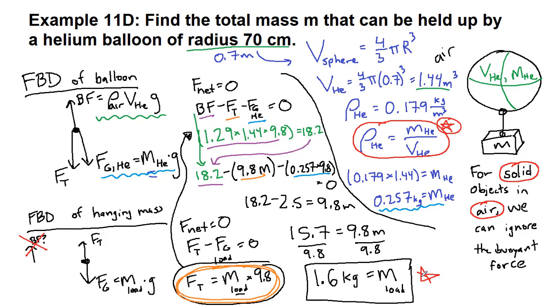That is the amount of stuff that we could attach to a balloon with a radius of 70 centimeters. And it doesn't seem like a whole lot for a balloon that looks kind of big. But one thing that's worth recognizing is that because the volume of a sphere is related to R cubed, if we double the radius of the balloon, it will actually be able to hold up not just twice the amount of stuff,